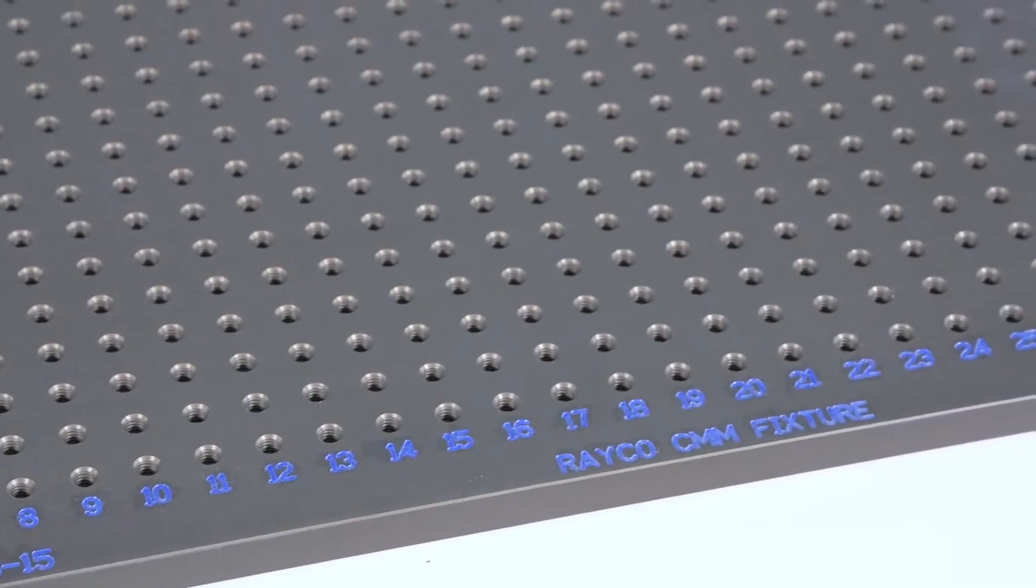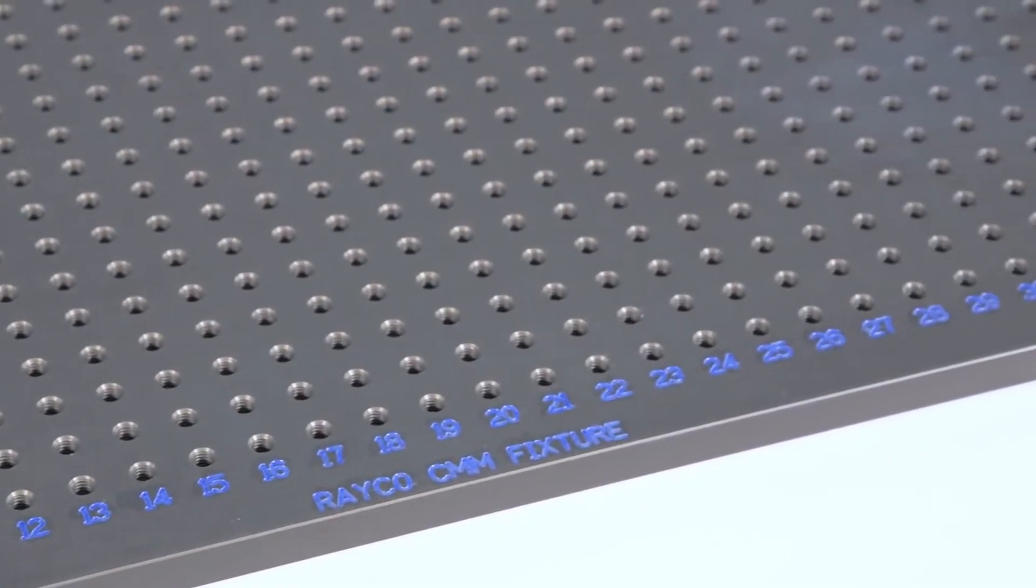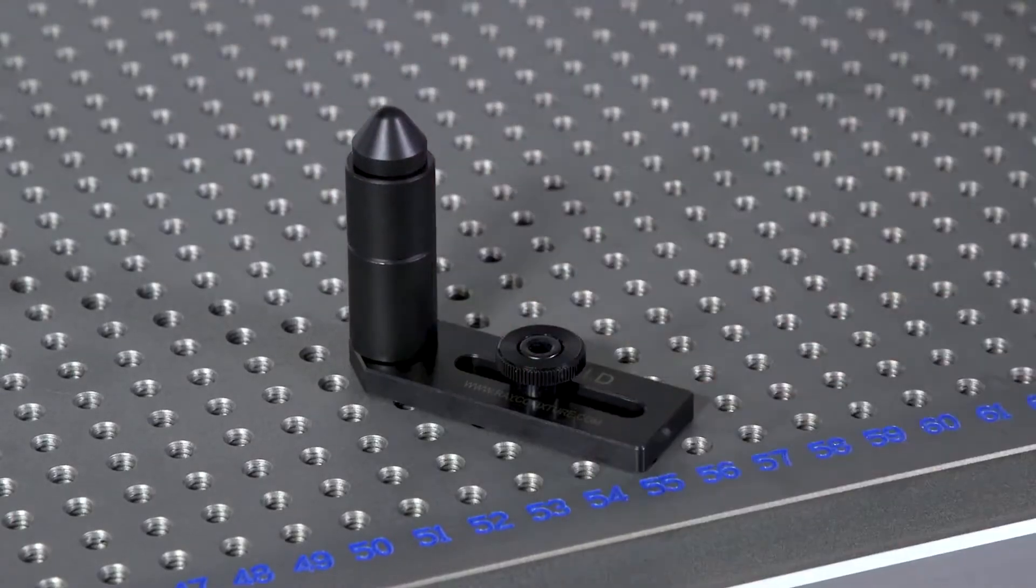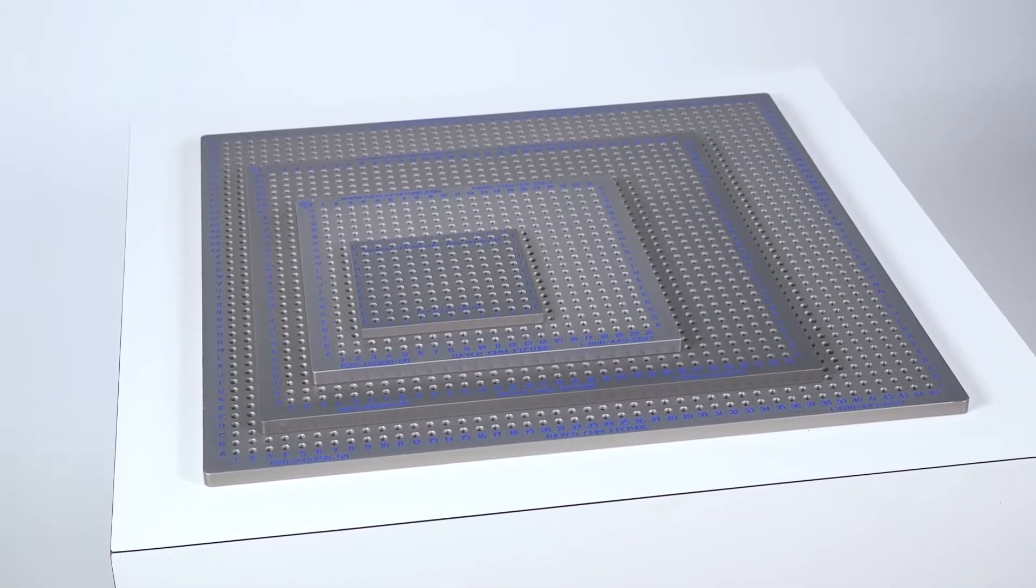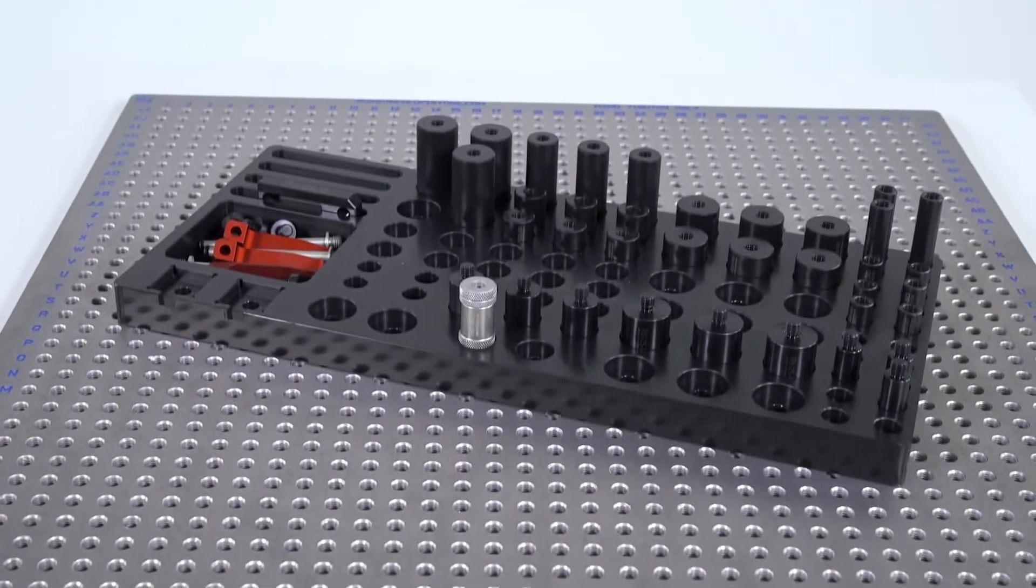Rayco CMM plates are coated with a hard coat anodized with Teflon that protects the plate surface from repetitive use. Our most popular plate sizes are stocked in-house, allowing for quick order turnaround.